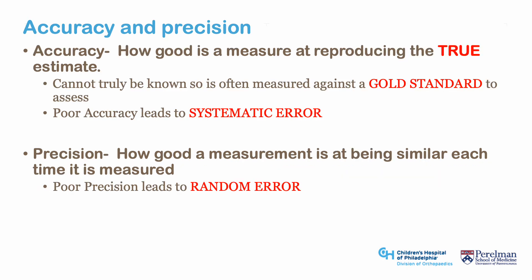Accuracy and precision are often discussed in reference to diagnostic tests, and an analogous concept is systematic versus random error. Accuracy is a measure of how good a test is at measuring the true estimate; since this is often difficult to know, accuracy is typically based on a gold standard — the closest known approximation to true disease status. This is why the highest level of diagnostic studies are based on comparison to a consistently applied reference gold standard. Poor accuracy leads to systematic error. Precision, on the other hand, is how good a test is at obtaining the same result each time for a given subject — like the test's intra-rater reliability. A test with poor precision results in random error.